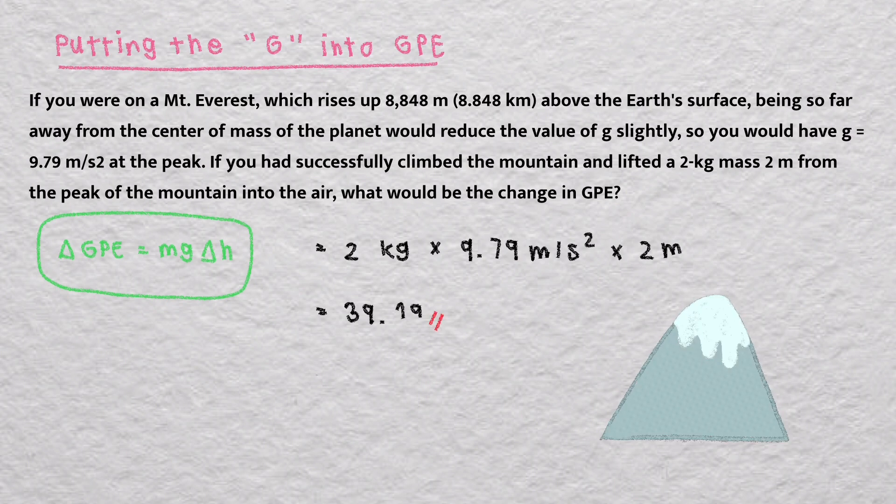So using the formula, 2 kg multiply 9.79 meters per second squared and multiply 2 equal 39.19 joules. Finding the kinetic energy using GPE.